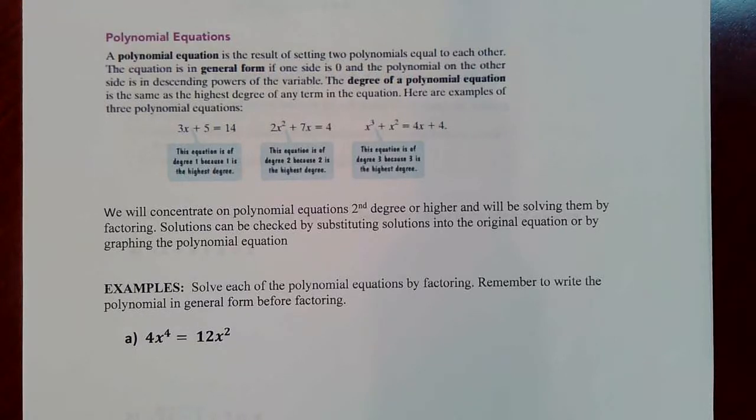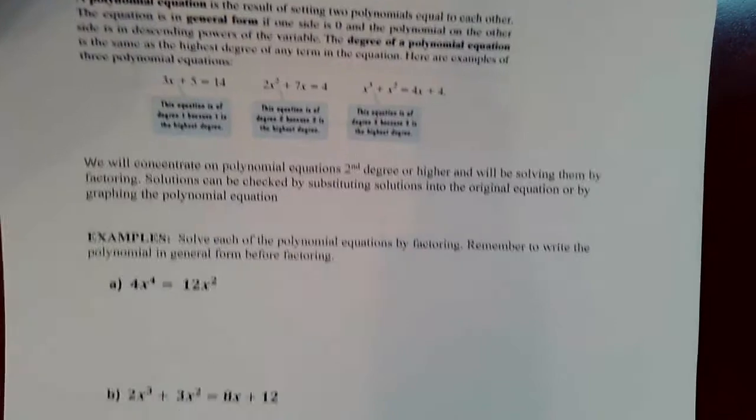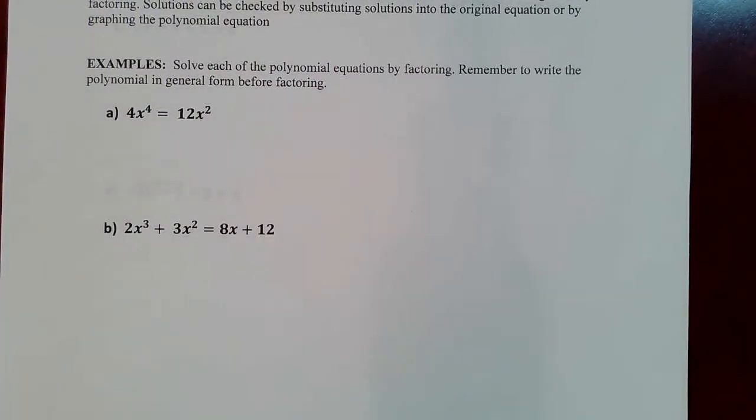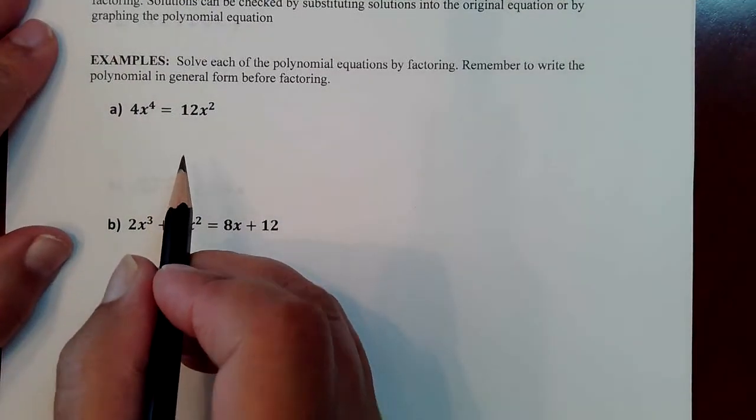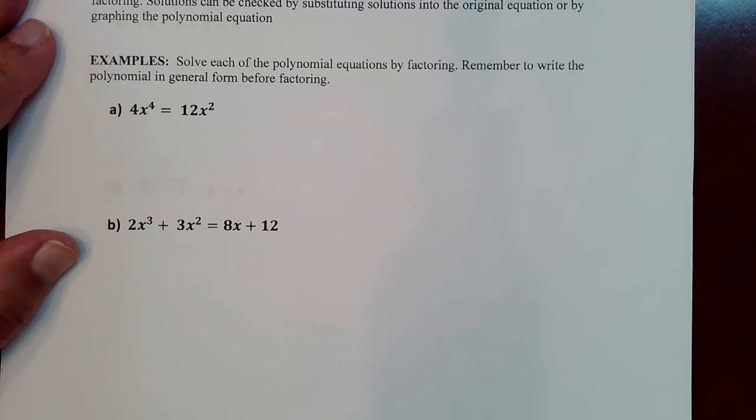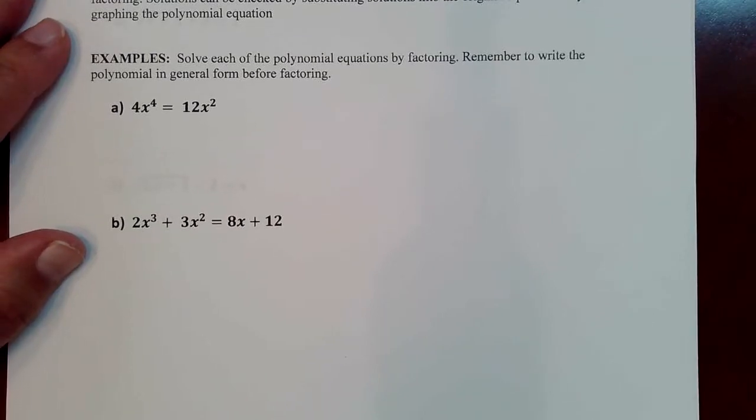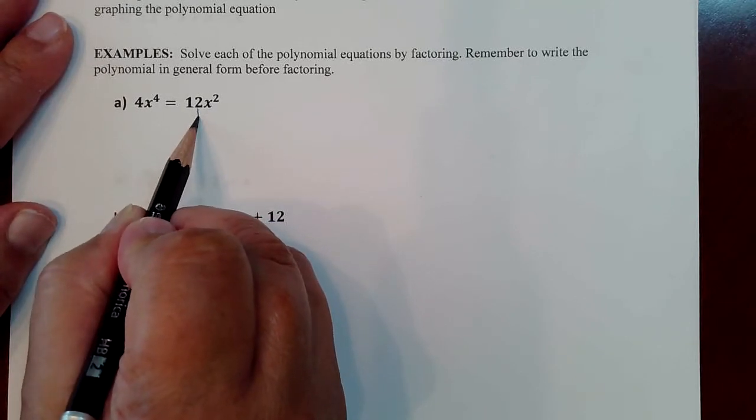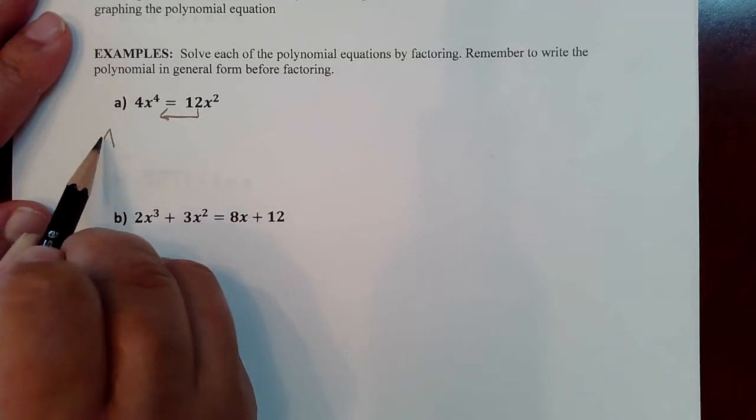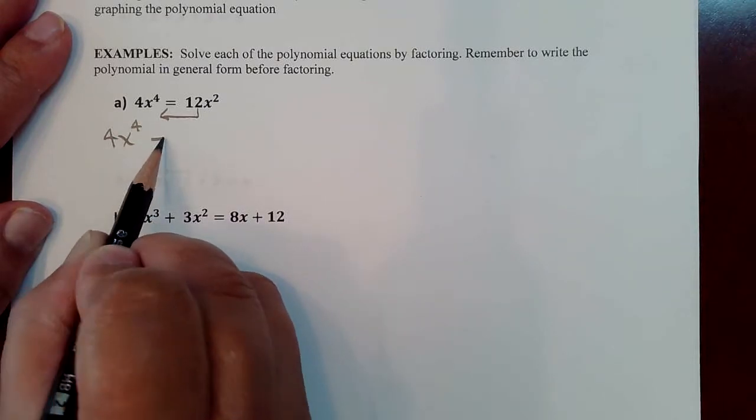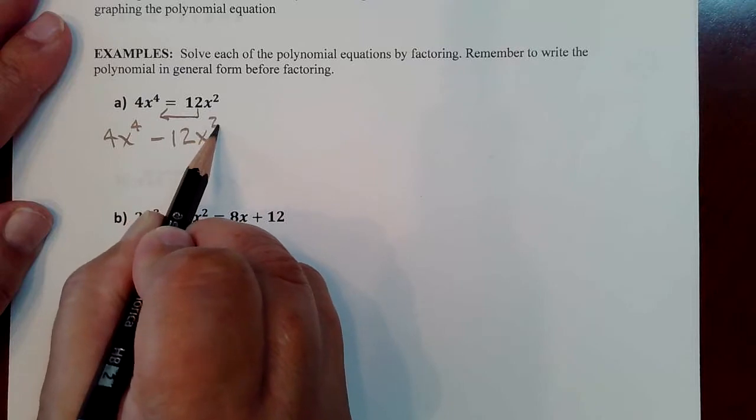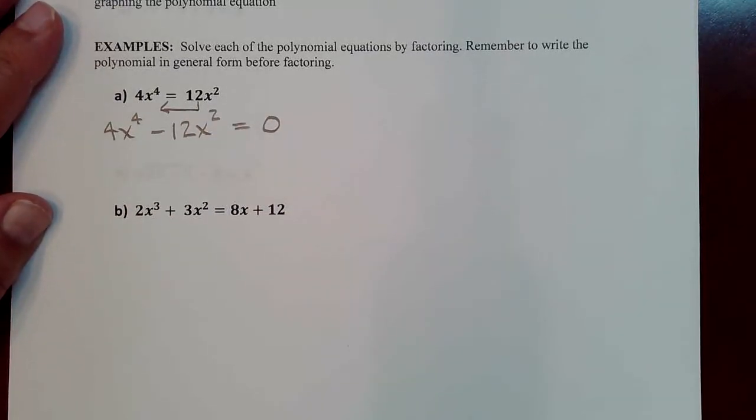So there's various factoring methods that work here. For instance, in the first example that we have here, we have 4x to the fourth degree and a 12x to the second degree. And we can factor this by first of all getting everything on one side, as you always have to do when you're factoring and using the greatest common factor method for factoring it. So we're going to bring this over here. At that point, you're going to have 4x^4 - 12x^2 = 0. So you're always going to zero out your equation, get it in that form before you start factoring.